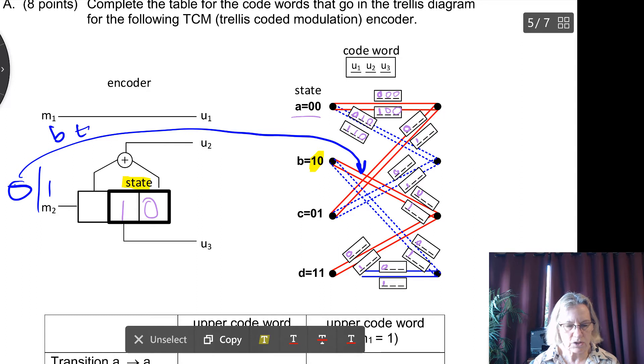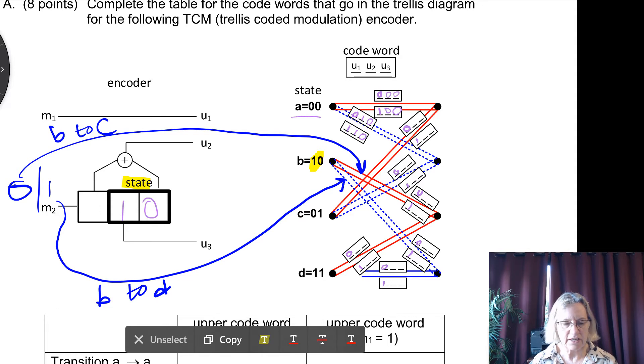So the 0 corresponds to this transition here from B to C. And if I have a 1 that comes in, of course, I have the opposite transition from B to D. So these two rails, I have to calculate what are the code entries for the last two bits.